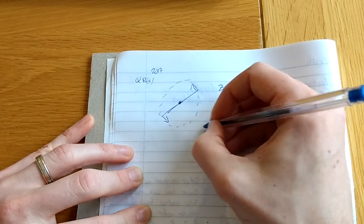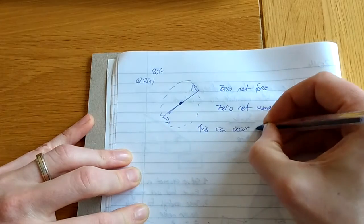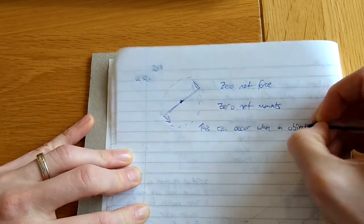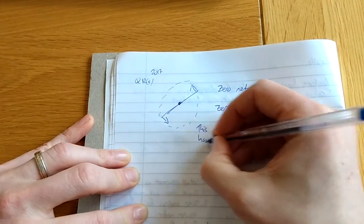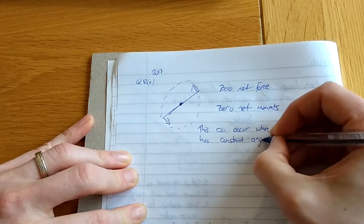Okay, so it happens. So we can say this can occur when an object has constant angular velocity.